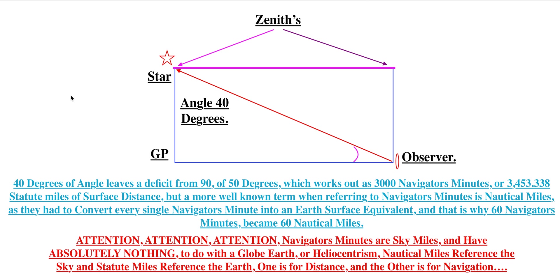40 degrees of angle leaves a deficit from 90 of 50 degrees, which works out as 3,000 navigators' minutes or 3,453.338 statute miles of surface distance. But a more well-known term when referring to navigators' minutes is nautical miles, as they had to convert every single navigator's minute into an earth surface equivalent. And that is why 60 navigators' minutes became 60 nautical miles.